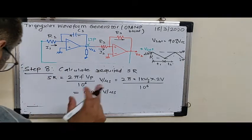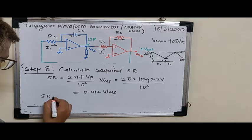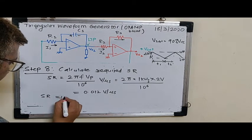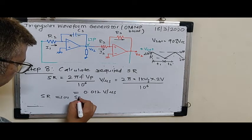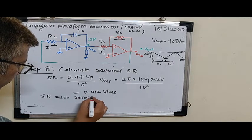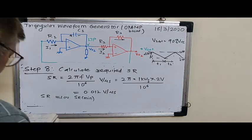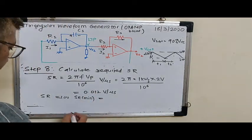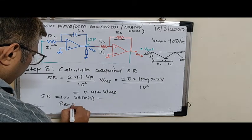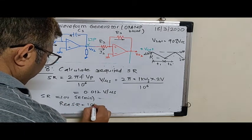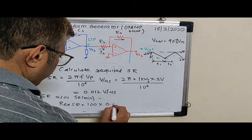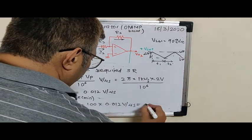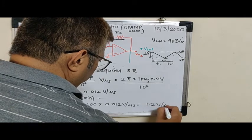Now to ensure the performance of the integrator, we have to make sure one important thing that the slew rate should be selected far more, equal to 100 times the minimum slew rate requirement. This ensures good performance. So the required slew rate is simply 100 into 0.012 volts per microsecond. That turns out to be 1.2 volts per microsecond.